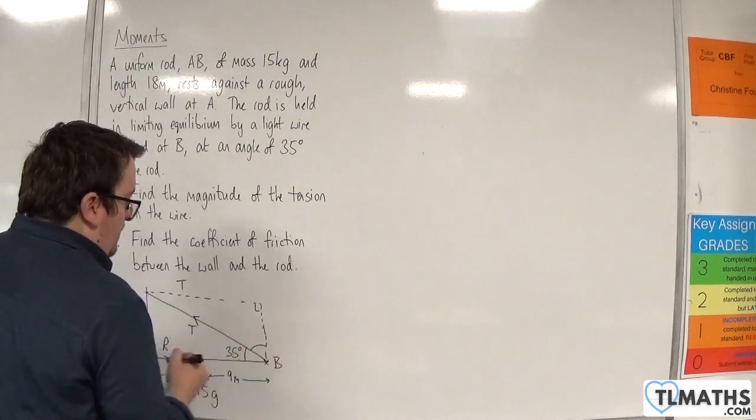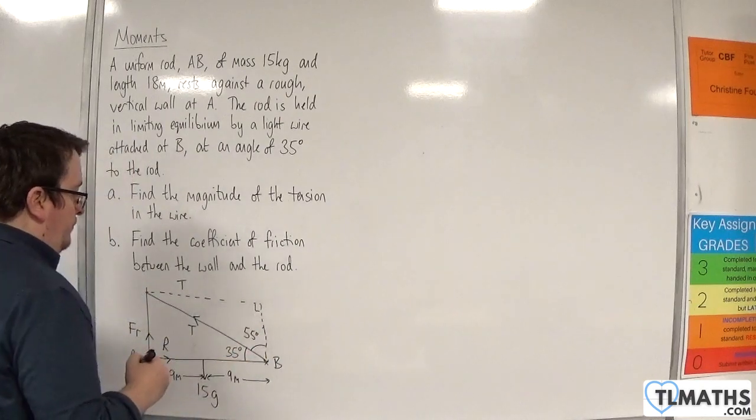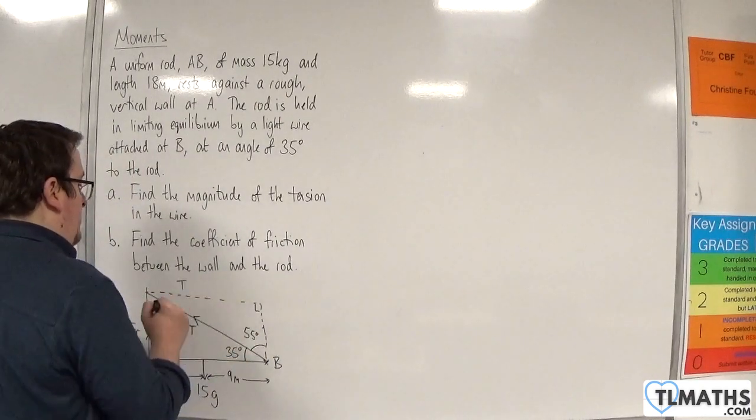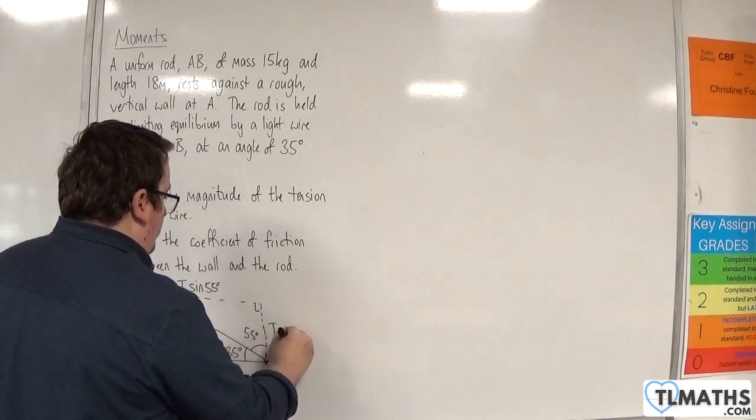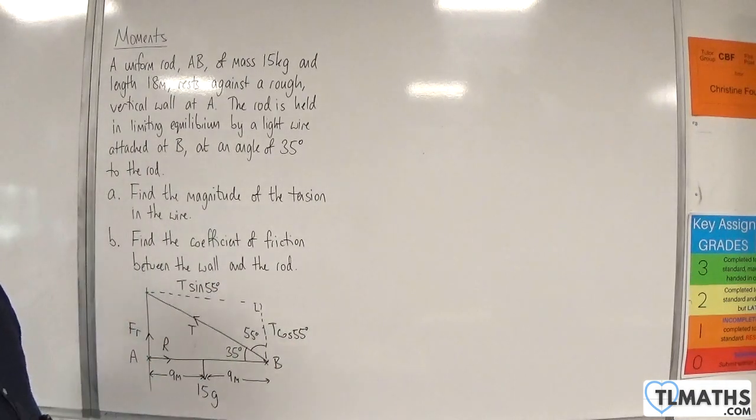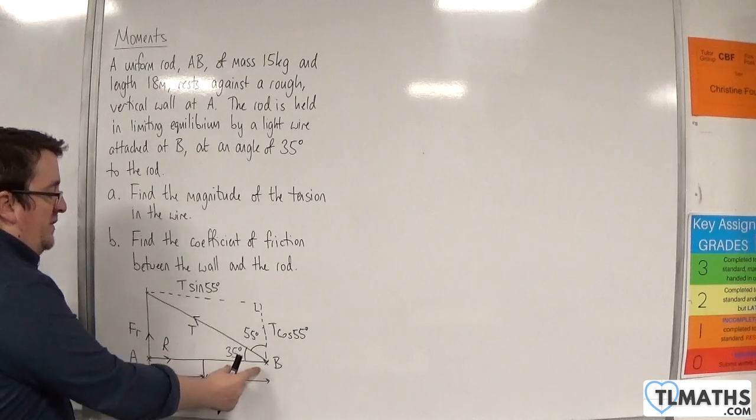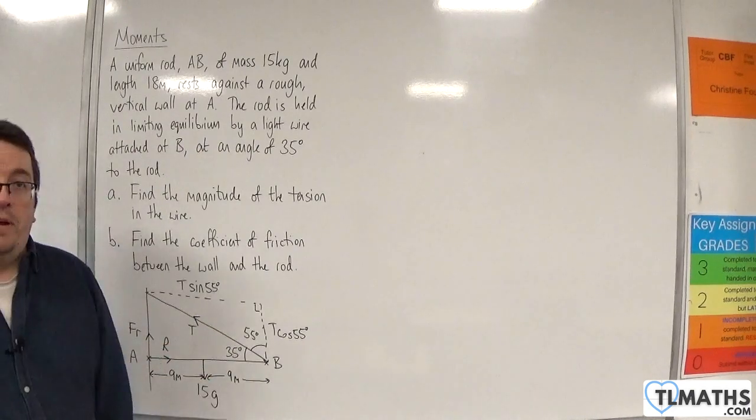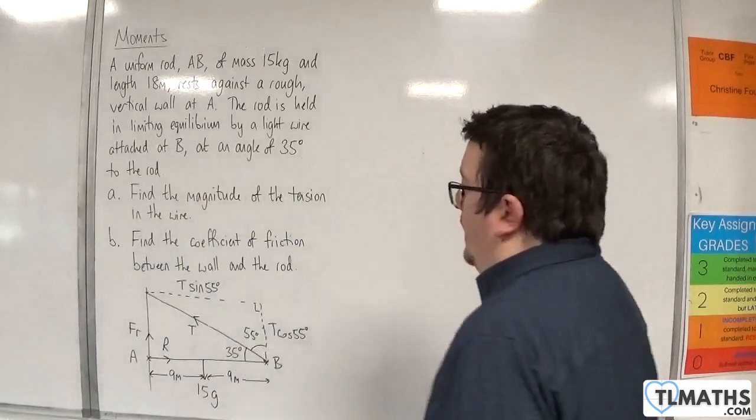This would be T, now that angle there is going to be 55 degrees. So this is T sine 55, and this is T cosine 55. It really depends on how you want to split that angle up. We could have done T sine 35 and T cosine 35. That might have been the more natural way. That's perfectly fine and we should get to the same results.